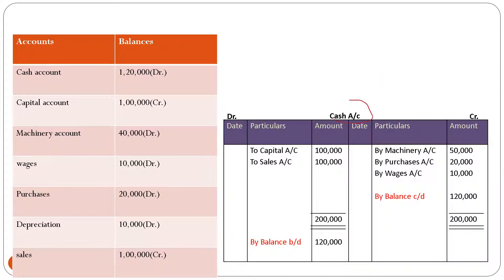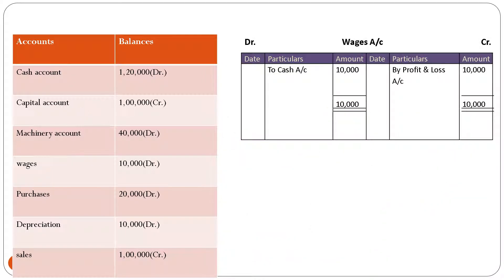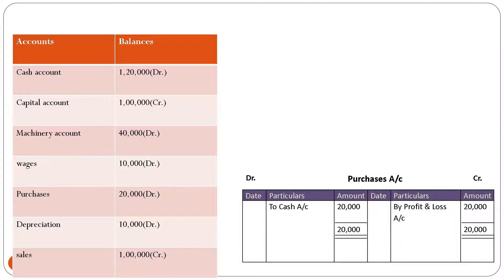Next is the cash account — the balance carried down is one lakh twenty thousand rupees. So we are done with cash and capital accounts. Moving to wages account: the carried down balance transferred to the profit and loss account is ten thousand rupees. Next is purchases account: the carried down balance transferred to the profit and loss account is twenty thousand rupees.